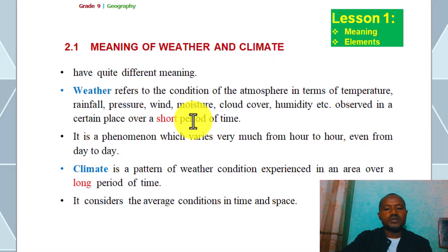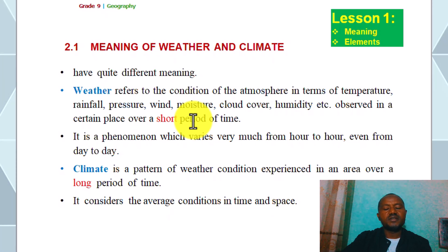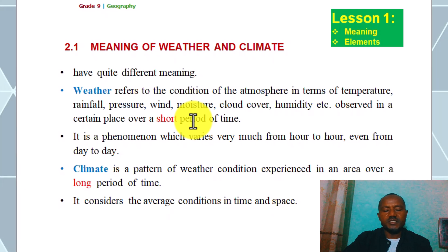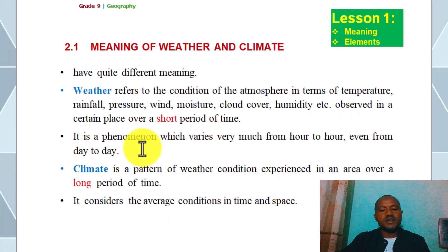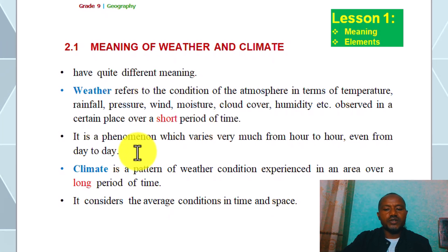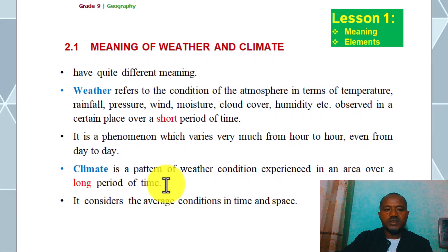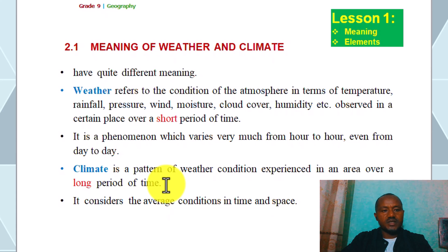Weather varies much from hour to hour and even from day to day. Climate is a pattern of weather conditions in an area over a long period of time, mostly more than 30 years.